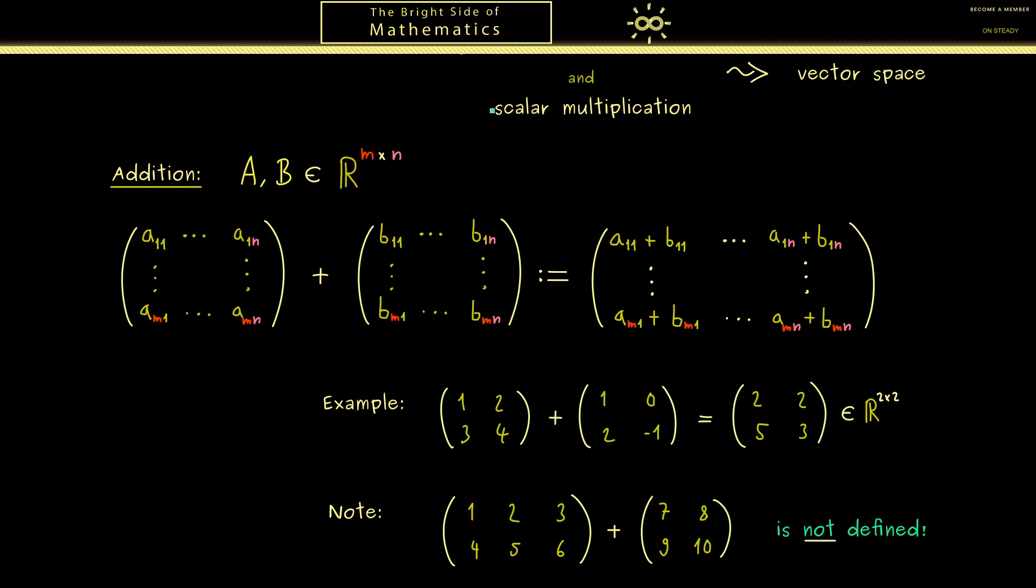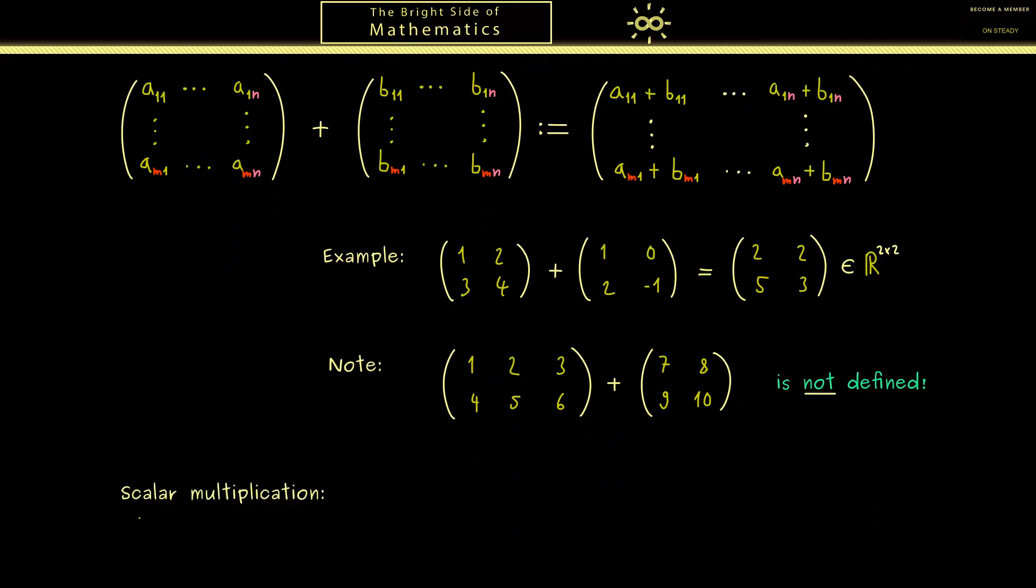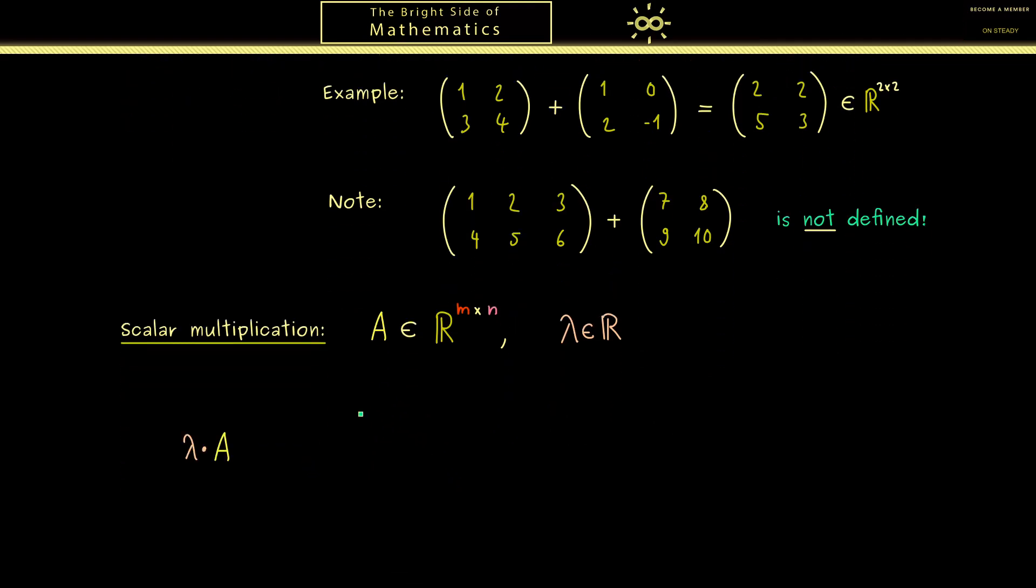Okay, so this is the addition, and the next thing we will define is the scalar multiplication. This means now such a table of numbers, a matrix, is multiplied by a scalar. Hence again we take a matrix A and in addition a scalar, a real number λ. And now we have to explain what λ times A means. So again as before, you see this dot here is a new operation. Indeed, in the same way as above, the definition is very natural: we just define it entry-wise. More precisely, this means in each entry we just use the normal multiplication of real numbers. So we simply multiply λ with the entry a_ij. And of course the result is again a matrix of the same shape.